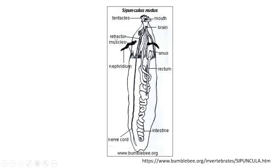Apart from that, you can also see the retractile muscles, the tentacles, the excretory organ — the metanephridia — and also the nerve cord.